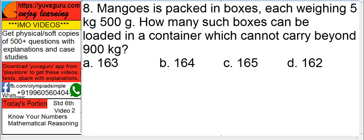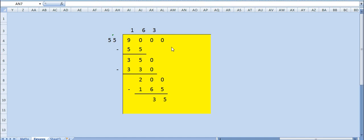So, 900 kg is the final weight, so just divide it, and the answer you will get is, see this is a division, and answer is 163 with remainder 35.